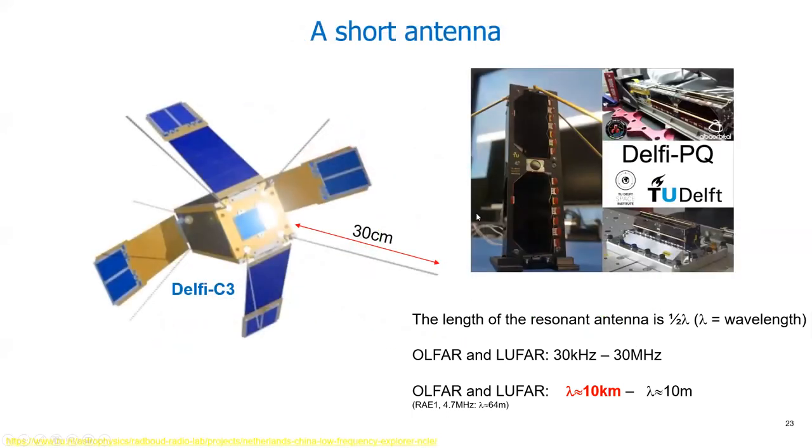Now we want to have a swarm and for a swarm we want to make small satellites. Here you see an example of a small satellite we launched 12.5 years ago called Delfi-C3, a Delft student satellite that we built. It has only a 13 centimeter antenna.